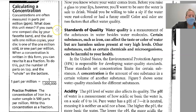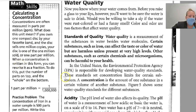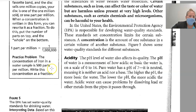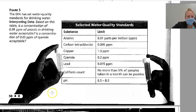Concentrations are often measured in parts per million. If you own one compact disc by your favorite band, and the disc sells 1 million copies, your disc is 1 of the 1 million sold, or 1 part per million. When a concentration is written in this form, you can rewrite it as a fraction — put the number of parts on top and 1 million below. Here's the practice problem: the concentration of iron in a water sample is 500 parts per million, so we write this as 500 over 1 million. You can reduce the fraction if you choose.